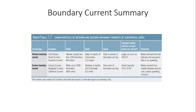Eastern boundary currents include the Canary current off the coast of Spain and northwest Africa, the California current off the west coast of the United States, and the Benguela current in the southern hemisphere. Eastern boundary currents are wide, shallow, slower, and generally transport much smaller volumes of water. Water is derived from mid-latitudes, and cool coastal upwelling is also common, where subsurface water rises up towards the surface as the top layer of water is blown away from the landmass.